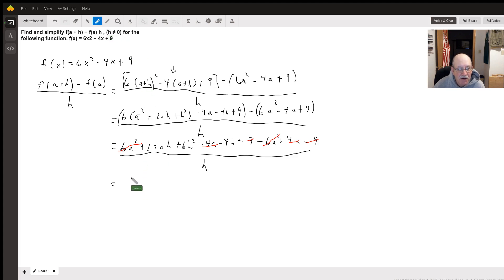So now I've got 12ah plus 6h squared minus 4h, over h.